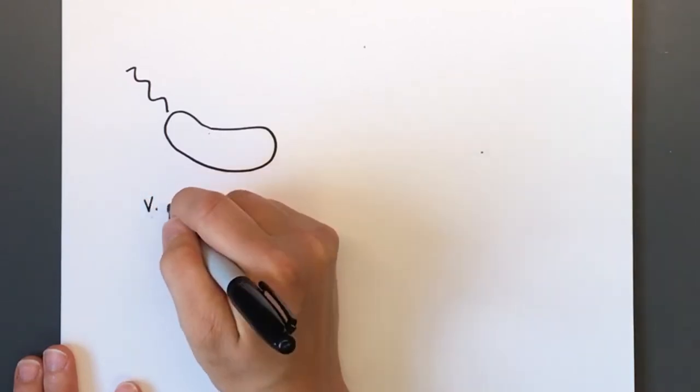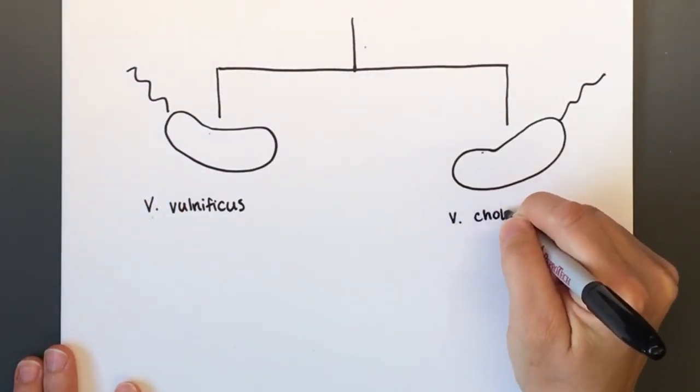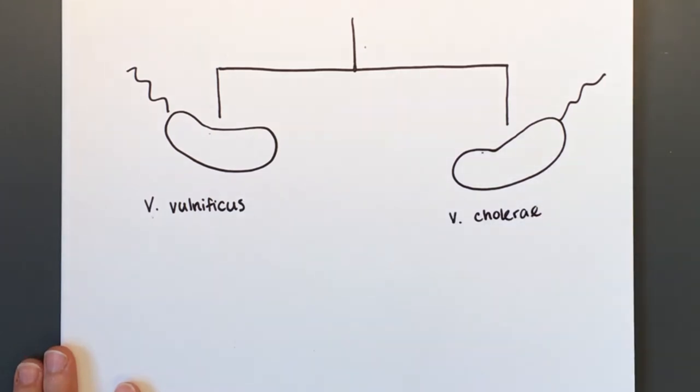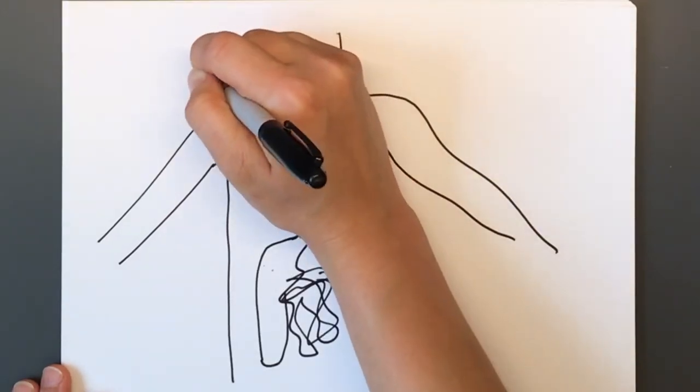I study a type of bacteria called Vibrio vulnificus. It's a bacterial cousin of the microbe that causes cholera. Vibrio vulnificus is a normal part of marine environments like the United States Gulf Coast, but it can cause problems for humans when we accidentally consume it.